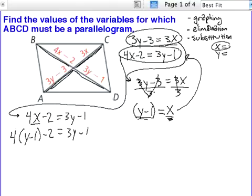Now, I can distribute this. 4 times y is 4y. 4 distribute to the 1, so minus 4 minus 2 equals 3y minus 1. If I combine like terms here, it's 4y minus 6 equals 3y minus 1.